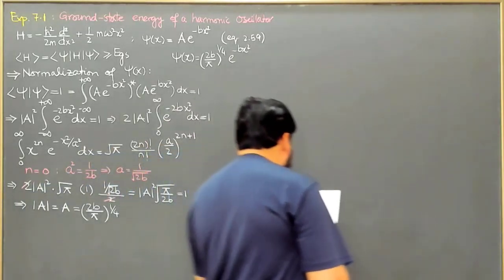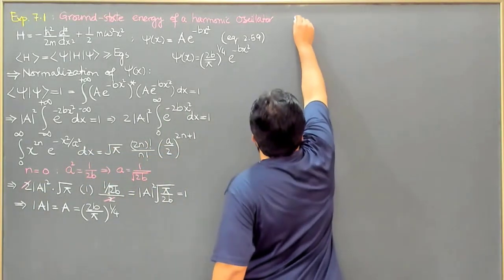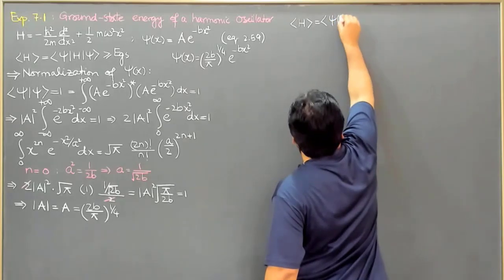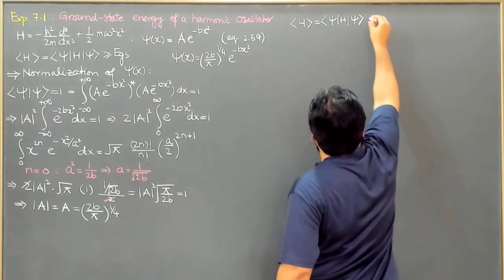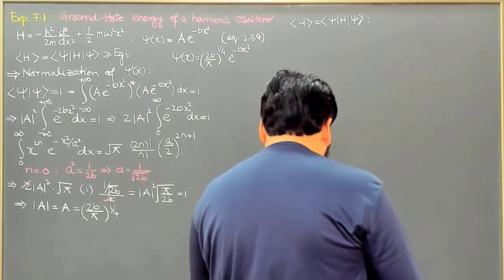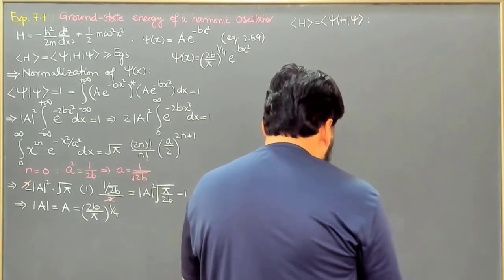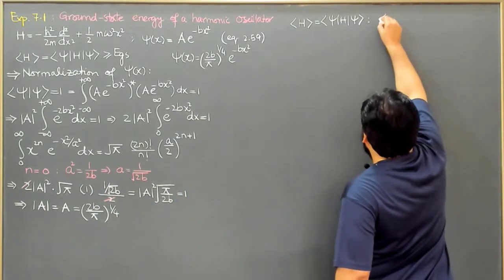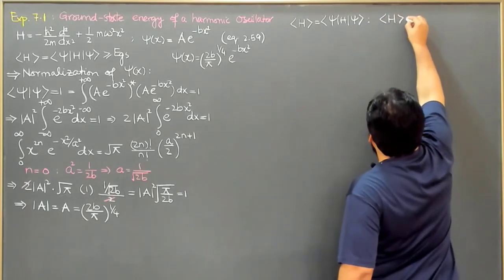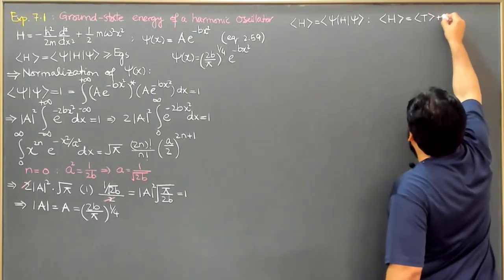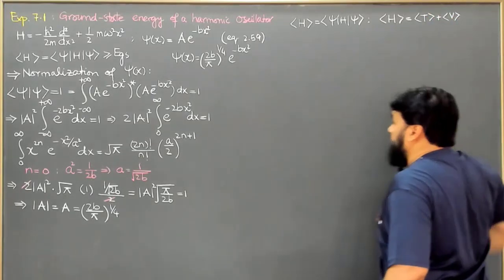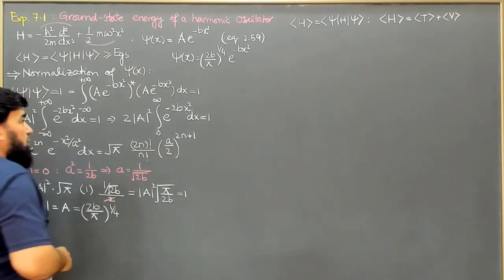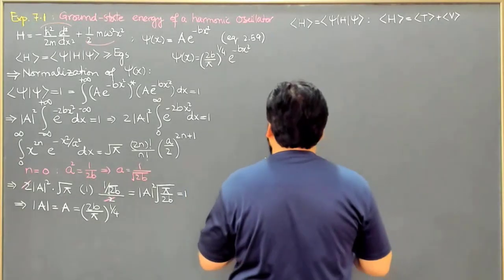Now we want to calculate the expectation value of H, as required by the variational principle, to get an upper bound for the ground state energy. The Hamiltonian expectation value equals the expectation value of kinetic energy T plus the expectation value of potential energy V. We will first find the expectation value of T.